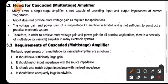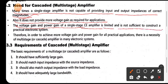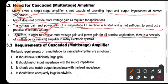We need multi-stage amplifiers because many times a single stage amplifier is not capable of providing the correct input and output impedance magnitude. The voltage gain and power gain of a single stage CE amplifier is limited and is not sufficient to construct a practical electronic system. Therefore, in order to achieve more voltage gain and power gain for all practical applications, there is a necessity of multi-stage or cascade amplifiers in many electronic systems.